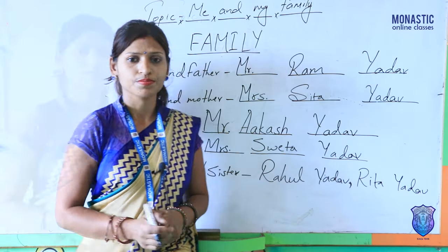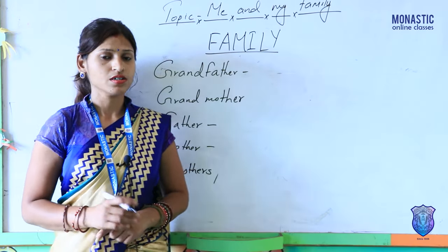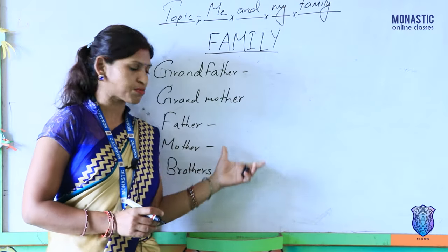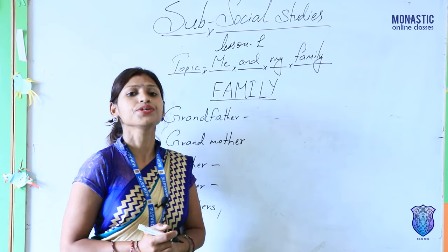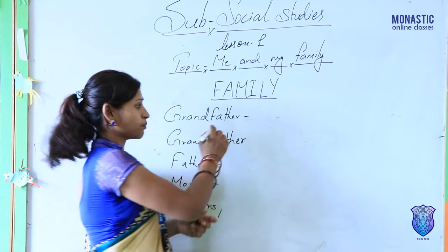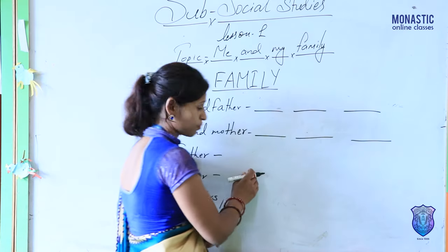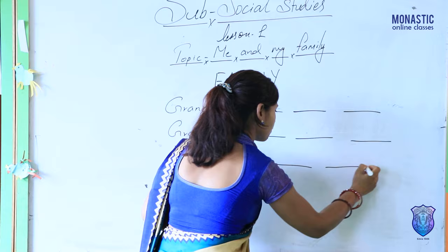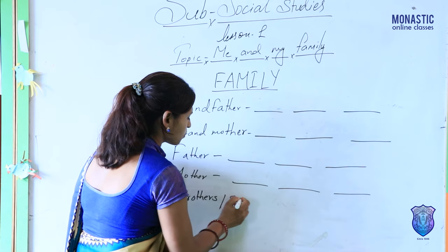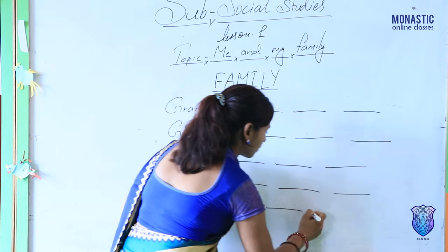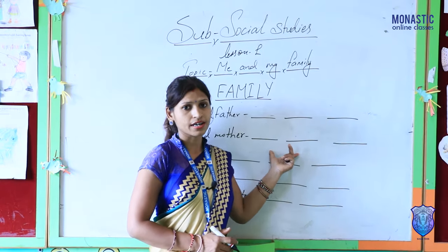Students, now it's homework time. You have your social book — in the first chapter, 'Me and My Family,' there are exercise steps given. You have to fill them nicely and fairly in your book: your grandfather's name, grandmother's name, father's name, mother's name, and the names of your brothers and sisters. Complete your homework very fairly.